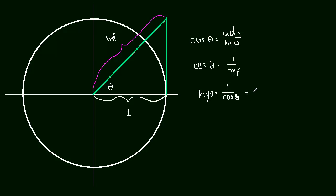And 1 over cosine, well, we know what that is. That has a name. It's called secant. Secant theta. So this purple length here, the hypotenuse, is really equal to the secant of theta.